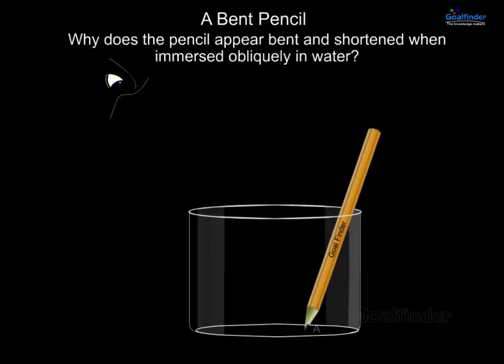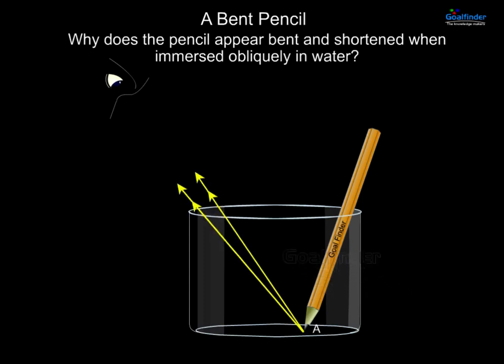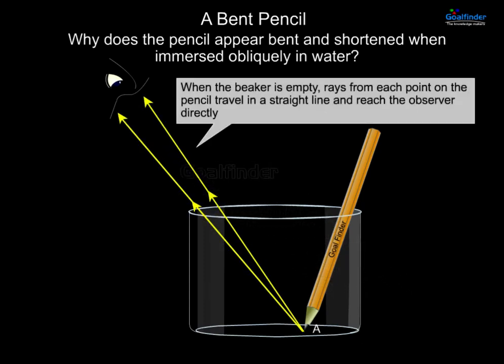Why does the pencil appear bent and shortened when immersed obliquely in water? When the beaker is empty, rays from each point on the pencil travel in a straight line and reach the observer directly.